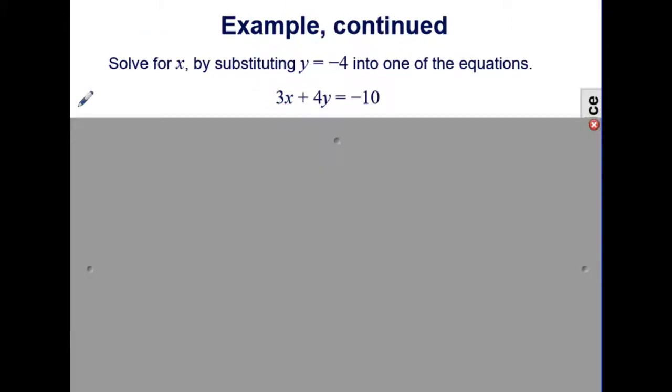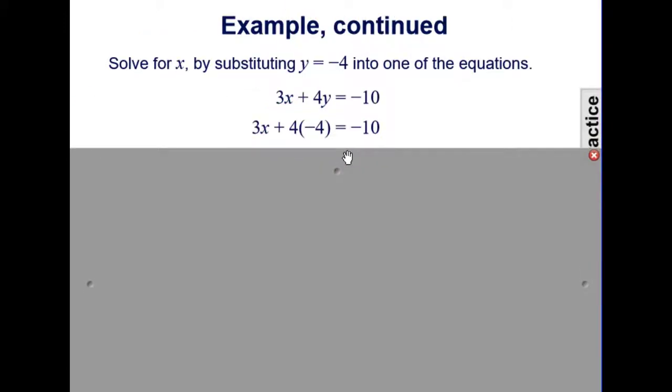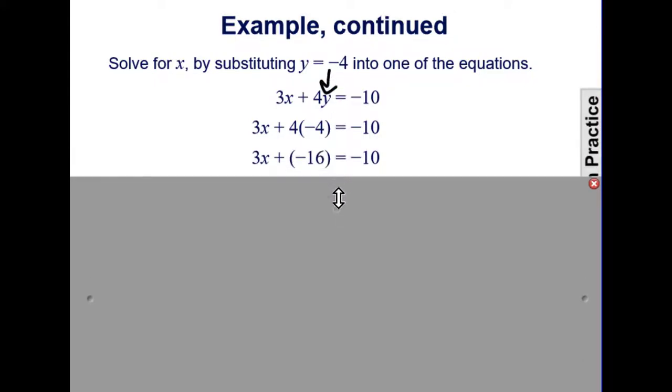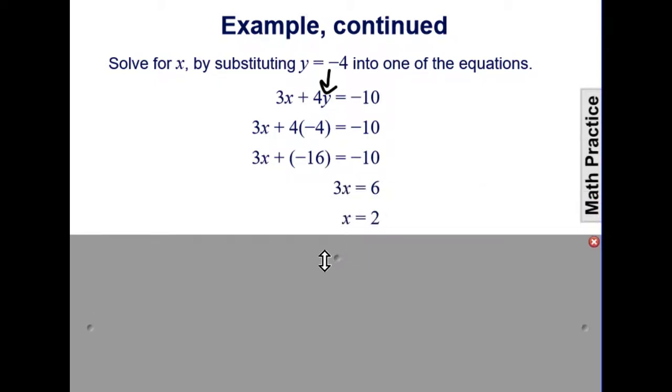We can now substitute that into either equation. So we're choosing this one, 3x plus 4y equals negative 10. Multiplying, changing to negative 16, adding the 16, and dividing by 3 gives us x equals 2.